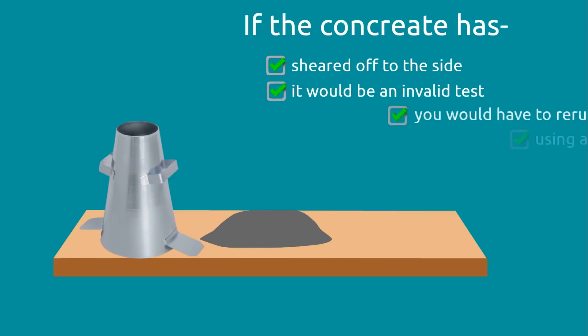If the concrete has sheared off to the side, it would be an invalid test and you would have to rerun the test using a different sample.